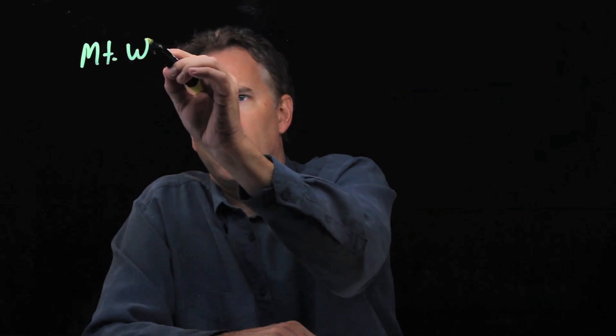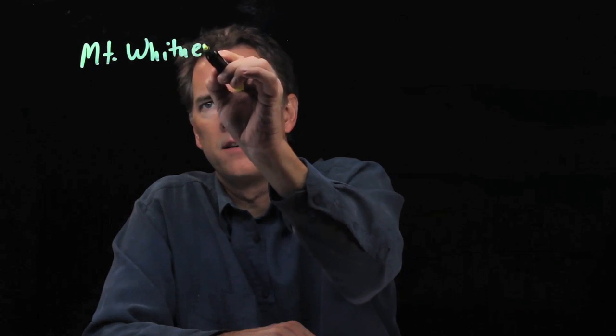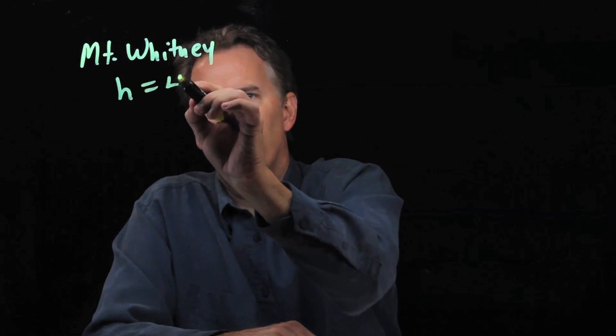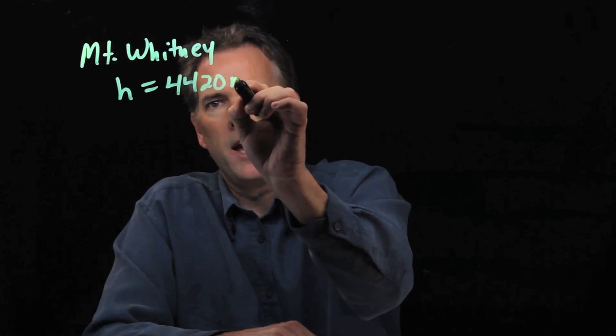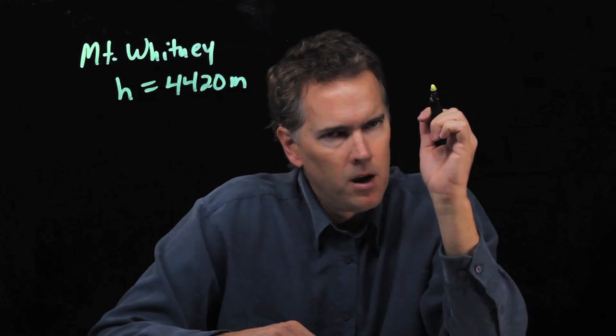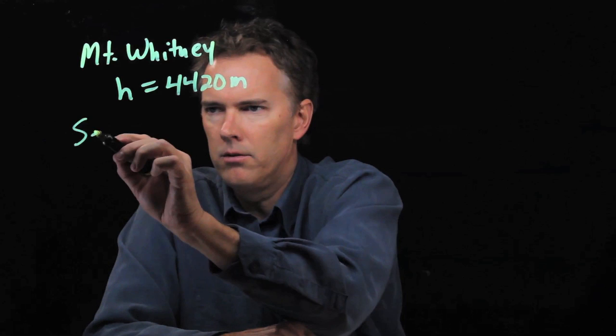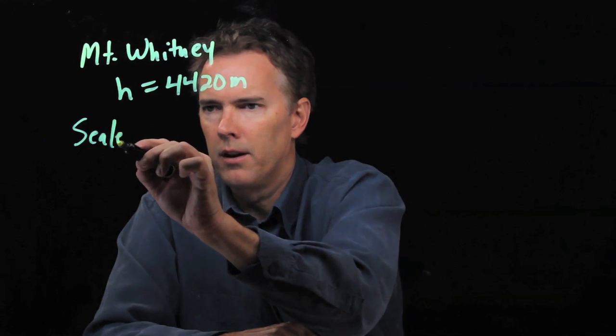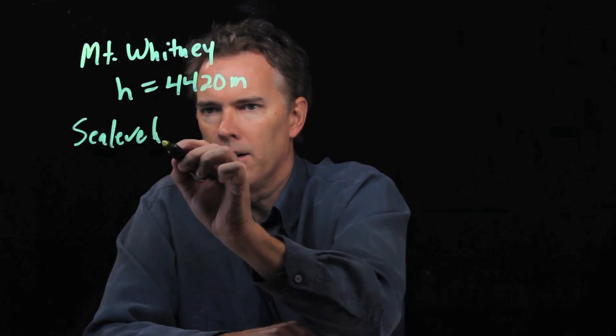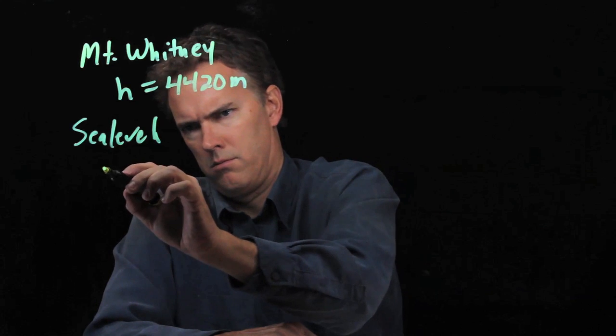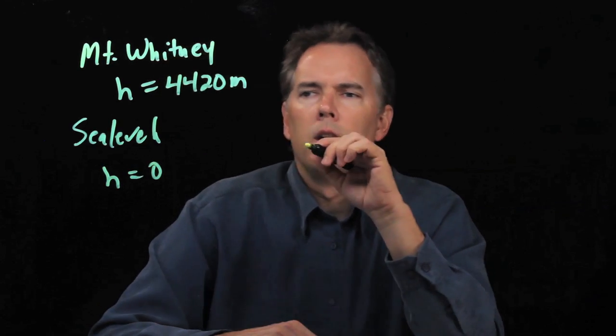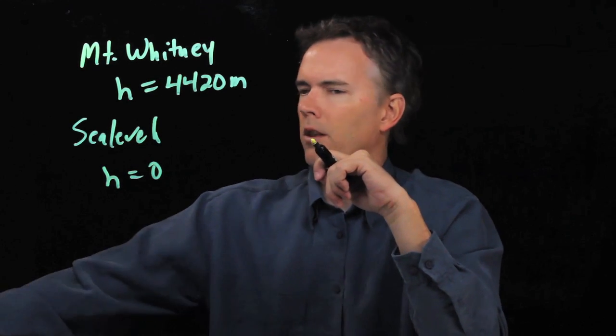Okay, so what do we know? We know that Mount Whitney has a height of 4420 meters. We know that at sea level you are of course at a height of zero, and so we'll just call this y initial and we'll call this one y final.